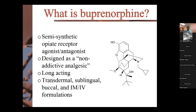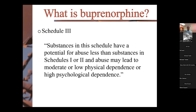What exactly is buprenorphine? It's a semi-synthetic medication derived from the poppy. You'll hear the term agonist-antagonist, which can be quite confusing because people talk about it being an opiate receptor agonist-antagonist. The original intent was to be a non-addictive analgesic that would be long acting. It does not come in oral forms — it comes transdermal, sublingual, buccal, IM, and IV — but the bioavailability is so poor orally that it limits how we administer the medication.